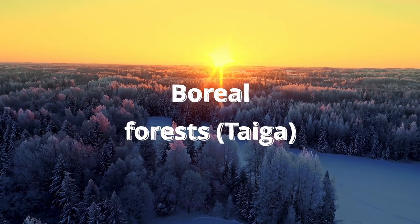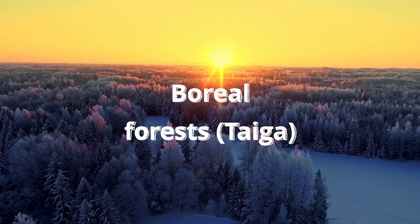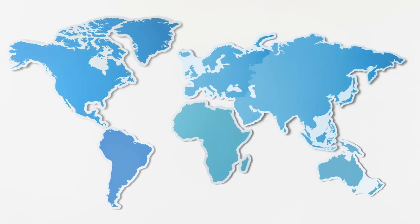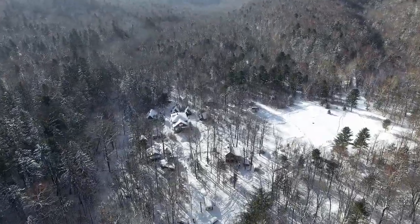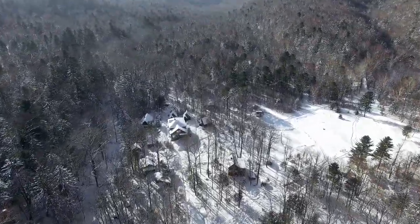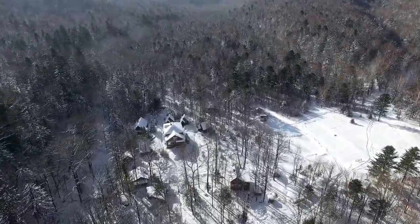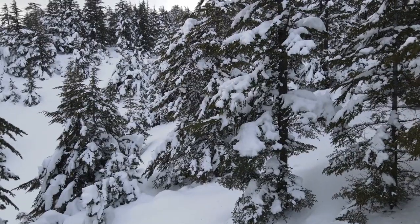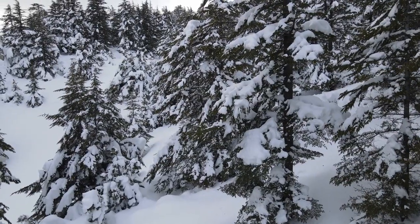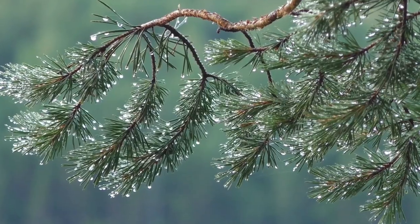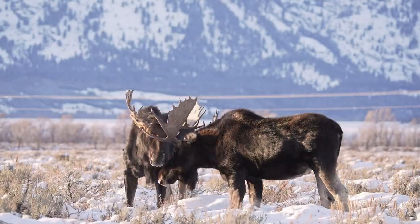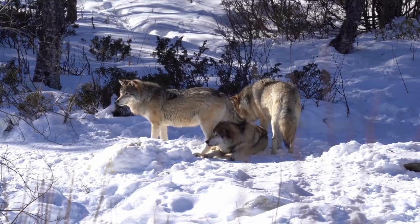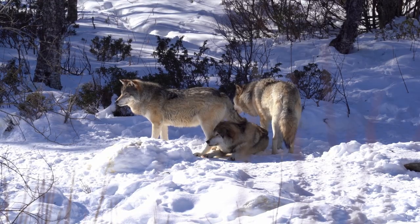Boreal forests, or taiga, are found in colder regions like Canada, Scandinavia, and northern Russia. These forests have chilly temperatures and relatively low precipitation, consisting mainly of conifers such as pine, spruce, and fir trees. Animals like moose, bears, and wolves can be found in such habitats.